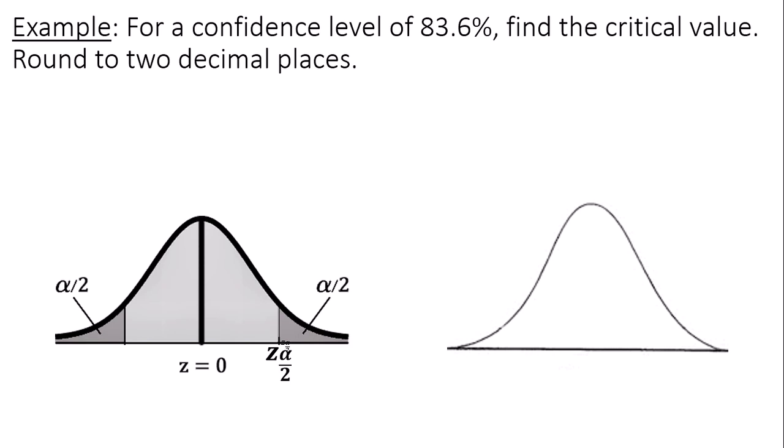So that means I want to find the data value or z-score whose area to the right is alpha over 2.